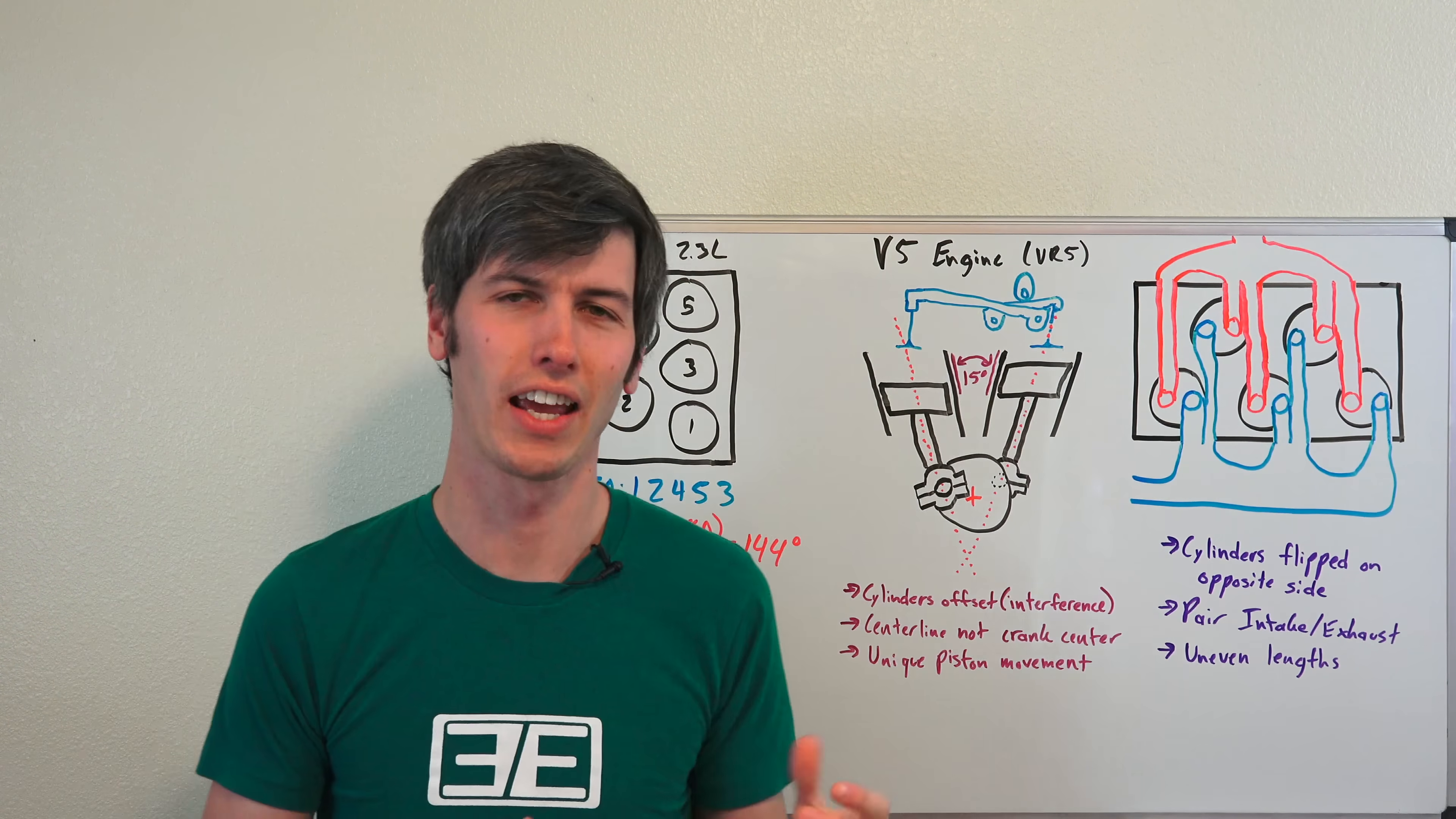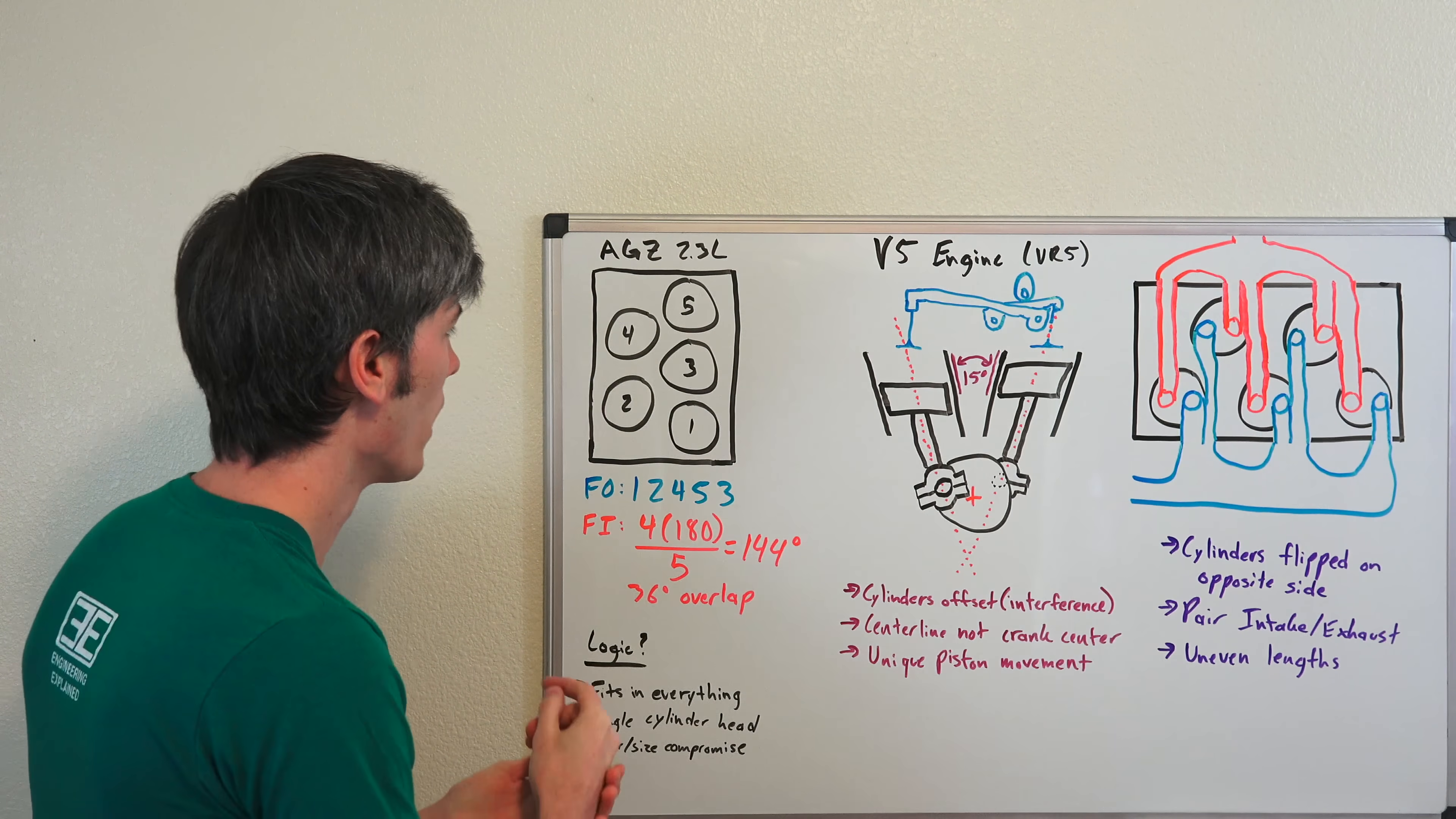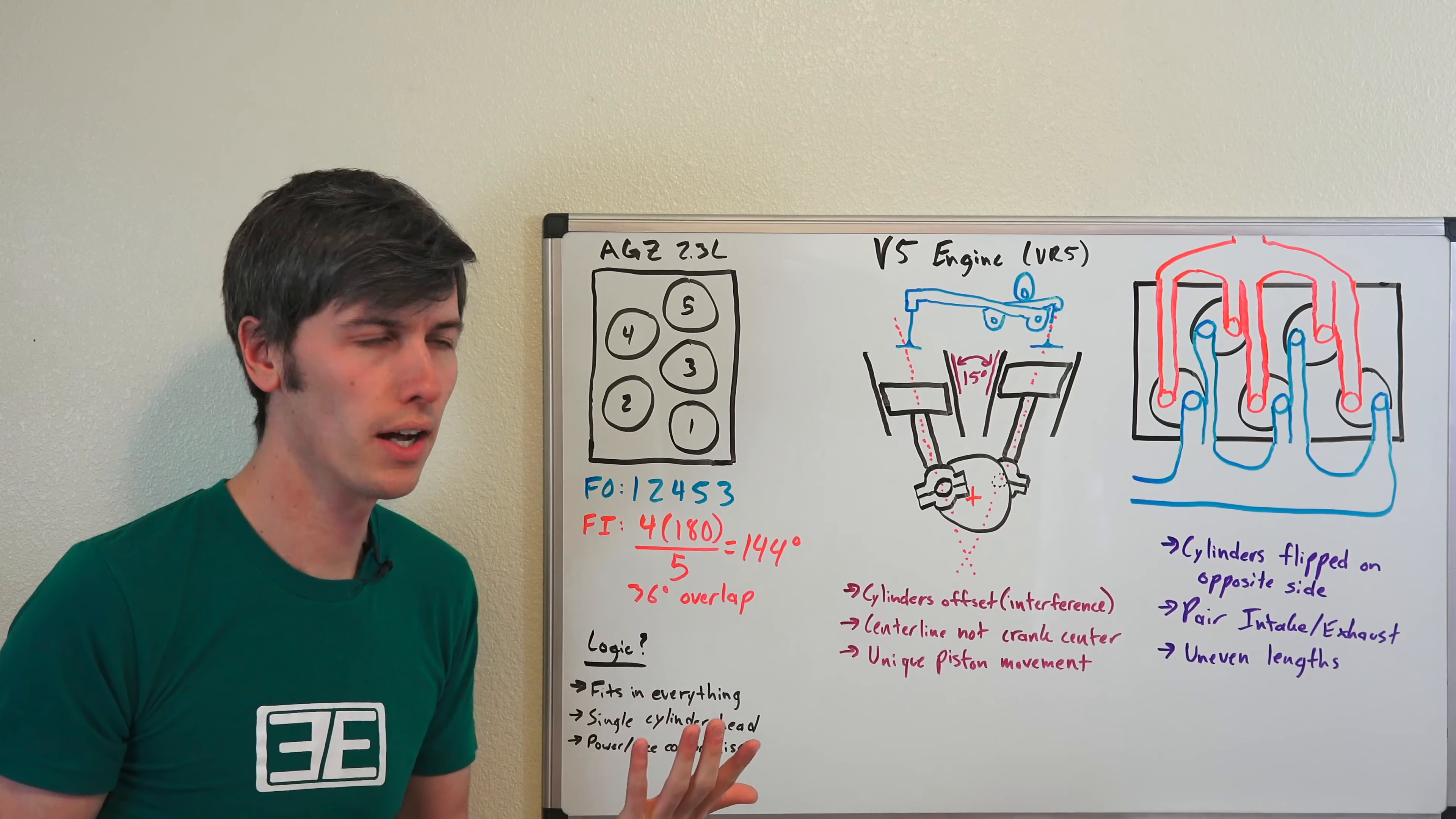Really what it is is just a VR6 engine and you've chopped off one of the cylinders. So if you were to look at the block here, you've got three on the right, two on the left, and your cylinders are one, two, three, four, five. Easy enough.